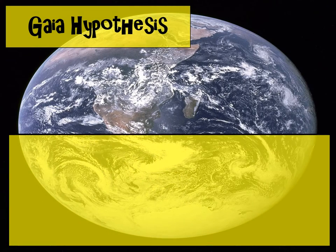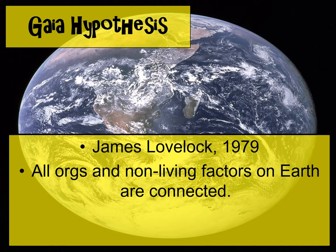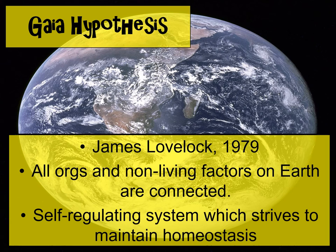In 1979, a professor named James Lovelock proposed what we call the Gaia Hypothesis. What this hypothesis says is that Earth is connected — all the components on Earth, all the organisms and the non-living abiotic factors. Ultimately, the Earth is trying to self-regulate itself; it strives to maintain homeostasis, and when things are out of balance, the Earth will work to restore that balance.